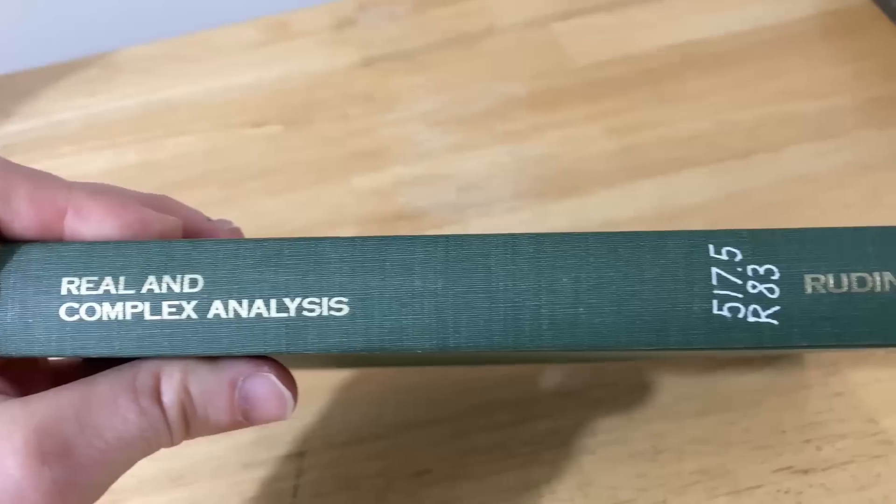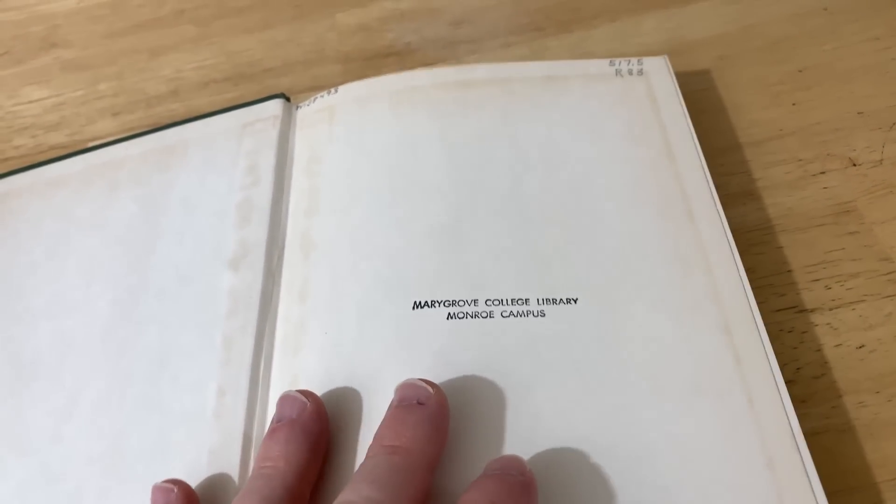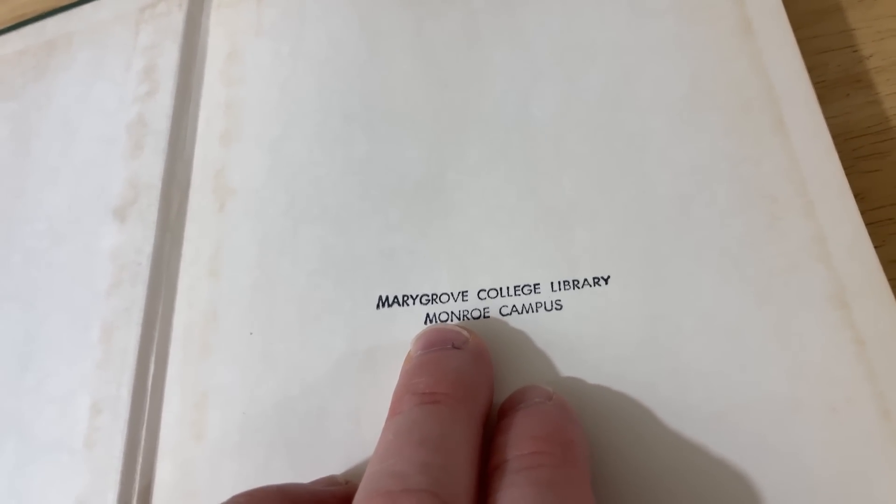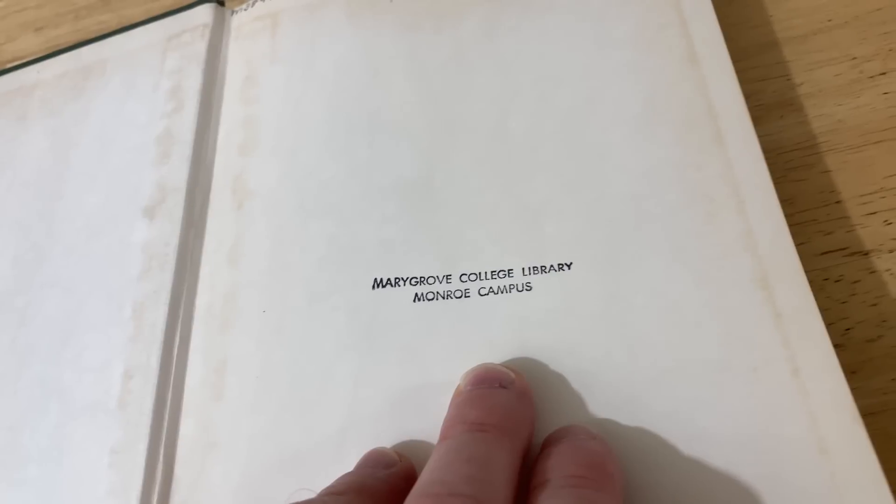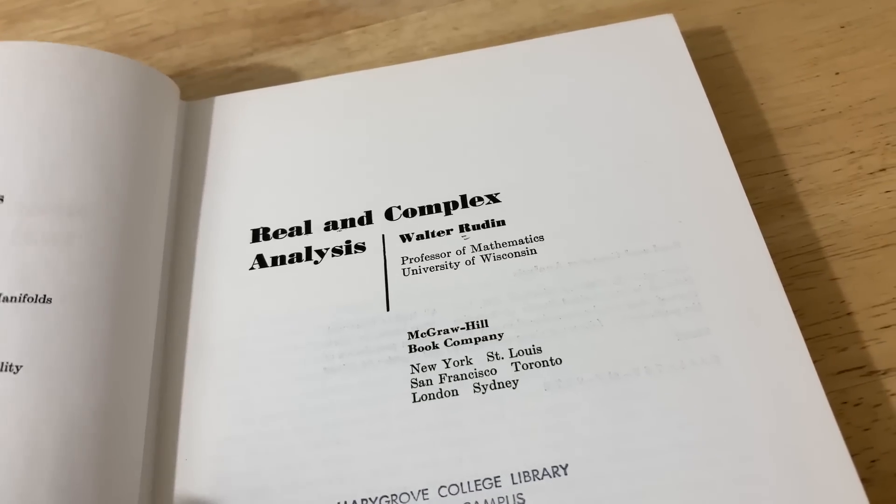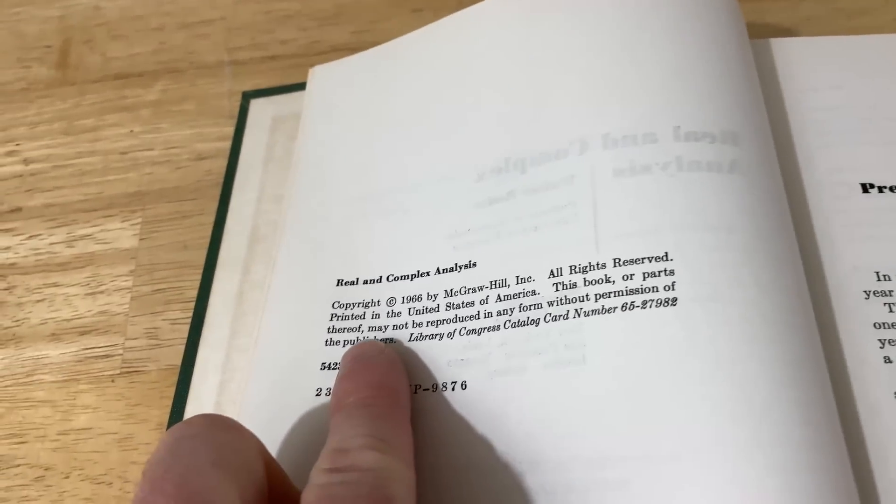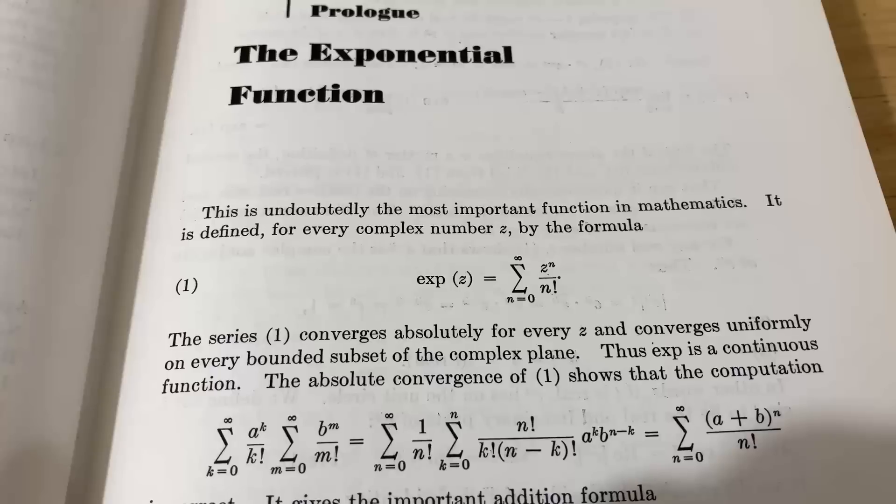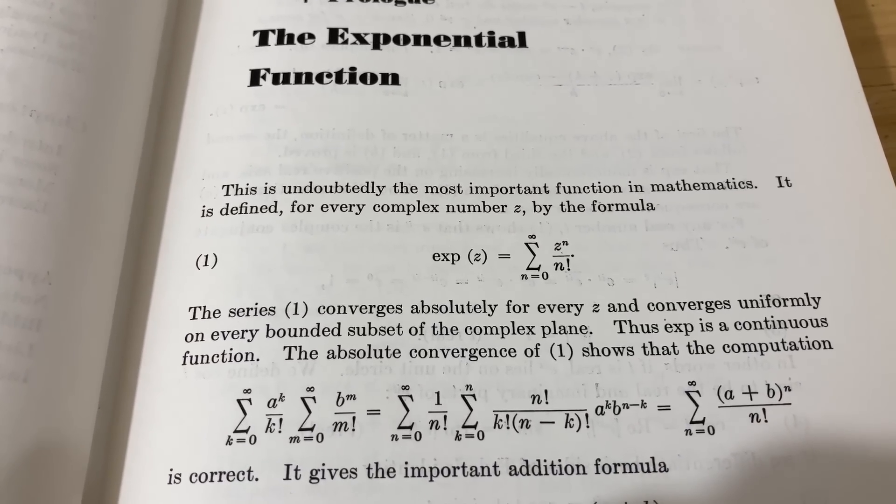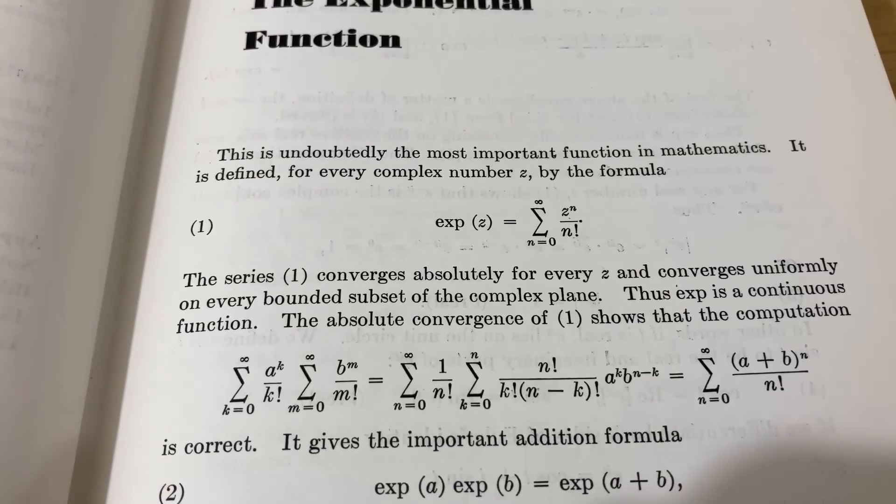This first book is Real and Complex Analysis and it's by Walter Rudin and so this book is so famous it has a nickname. People call it Papa Rudin. Apparently it was part of the Marygrove College Library the Monroe campus. So I bought this book even before taking a class on the subject. This edition is from 1966 and this book is awesome. You can see right away what you need to know in order to read this book. You basically have to know a lot of math. This is a graduate level book.